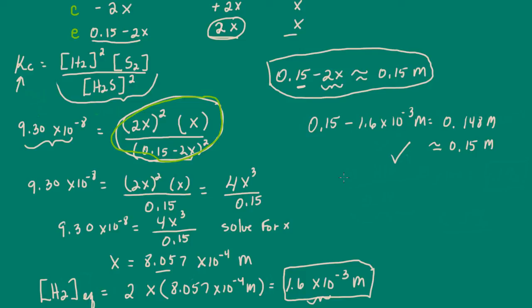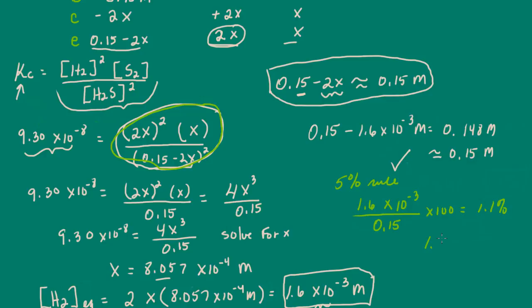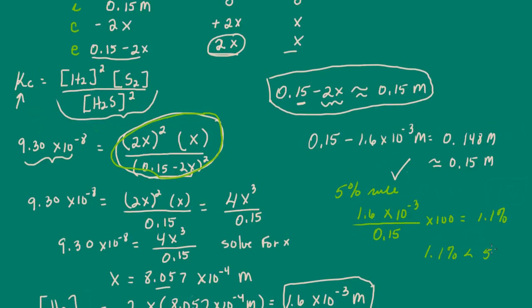Another way to check the assumption is the 5% rule. We take 2X — which is 1.6 times 10 to the negative 3 molar — divide by the original concentration of 0.15, and multiply by 100. That gives 1.1%. Since 1.1% is less than 5%, the assumption is valid.